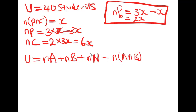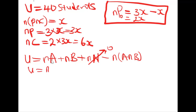The number N here refers to those who didn't partake in the survey, but in this question it is not given, so it is 0. Assuming A is the number who offer physics and B is the number who offer chemistry, the formula becomes: number offering physics plus number offering chemistry minus the intersection.